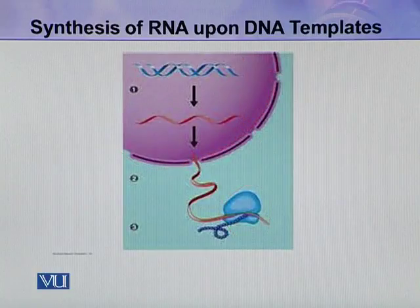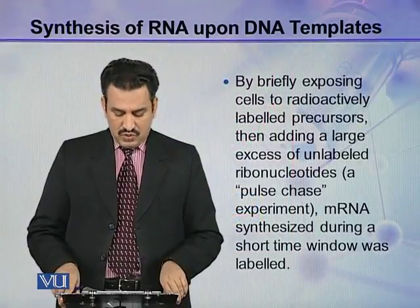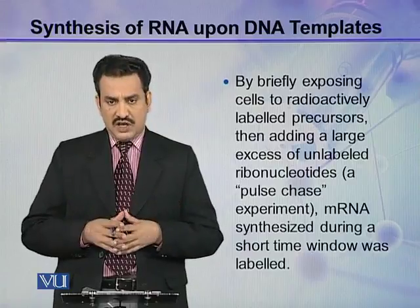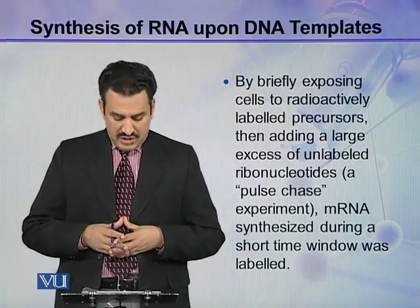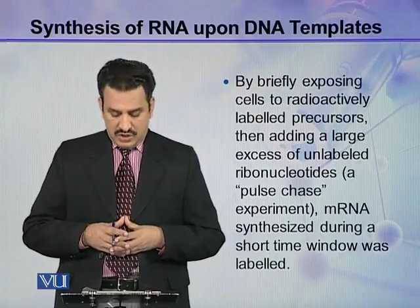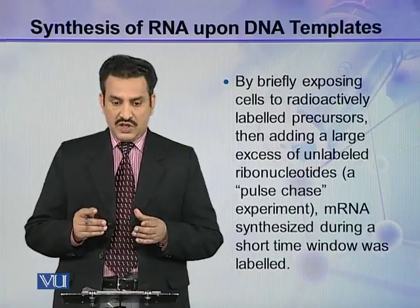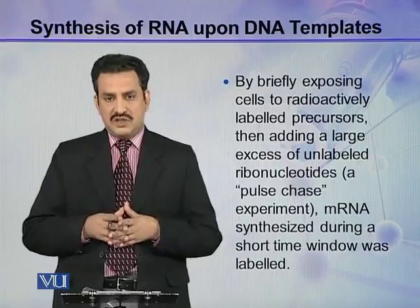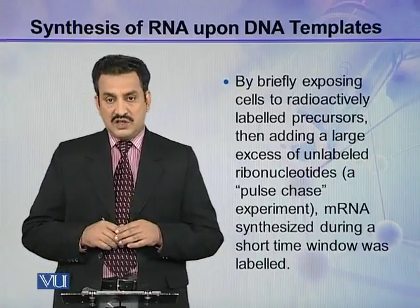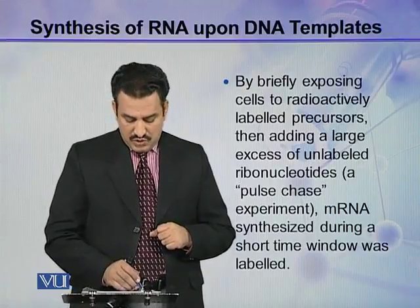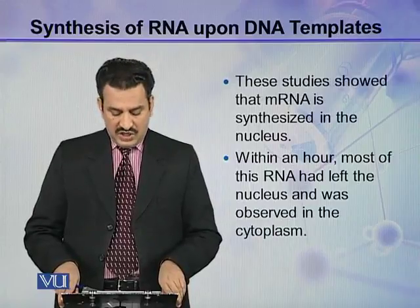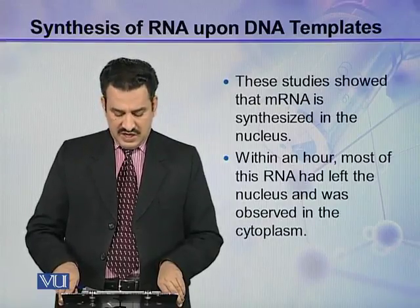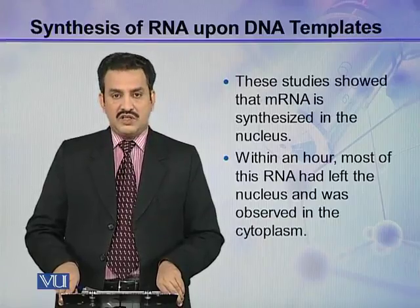By briefly exposing cells to radioactively labeled precursors and then adding a large excess of unlabeled ribonucleotides — a pulse-chase experiment — the mRNA synthesized during a short time window was labeled. Labeled ribonucleotides were added for a very short span, then unlabeled ribonucleotides were added, and it was checked where the labeled nucleotides were located. These studies showed that within an hour of synthesis, most of the labeled RNA had left the nucleus and was observed in the cytoplasm.